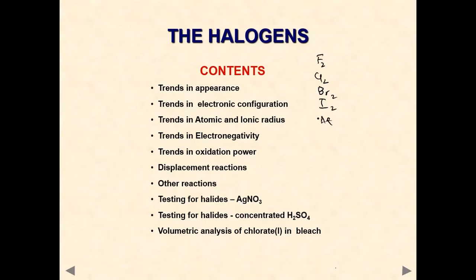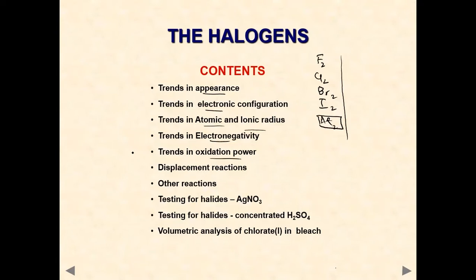Astatine is radioactive so we are going to remove it from detailed discussion. We will learn about physical appearance and trends in appearance. The topics we need to cover include appearance, electronic configuration, atomic and ionic radius, electronegativity, and oxidation power. Testing is also important — testing using H2SO4, and volumetric analysis involving the chlorate ion.